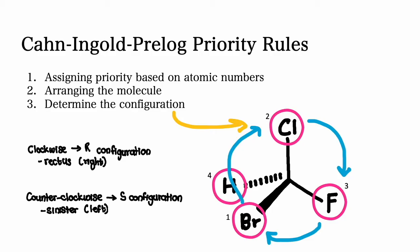However, if the priority groups are moving in a counterclockwise direction, then it is assigned an S configuration. S stands for sinister, and this is Latin for left.